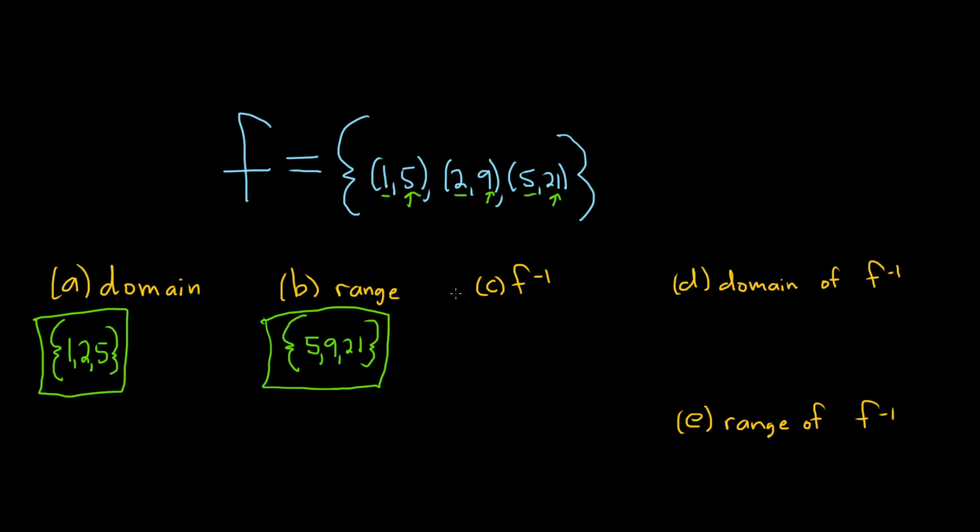To find the inverse function, all we have to do is swap the x and y-coordinates. So the inverse function is the set containing the ordered pairs. So instead of (1,5), it's (5,1). Instead of (2,9), it's (9,2). And instead of (5,21), it's (21,5). And this would be the inverse function. So all it does is swap x and y-coordinates.